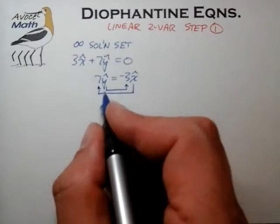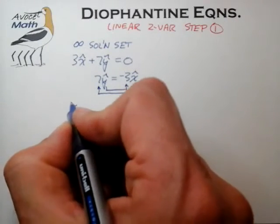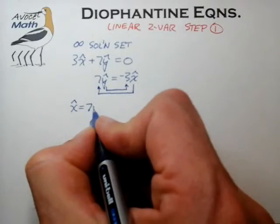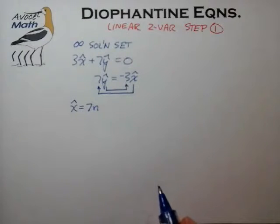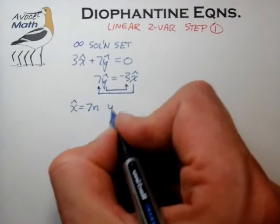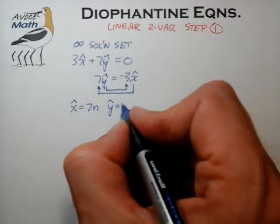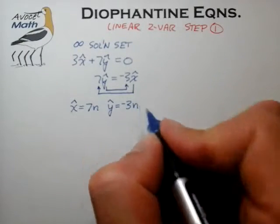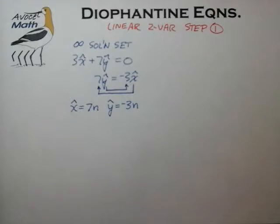We see that the only way this can happen is if in fact x-hat can be written as an integer multiple of 7, and y-hat in turn can be written as a negative integer multiple of 3 — with the same multiple n appearing in both equations.